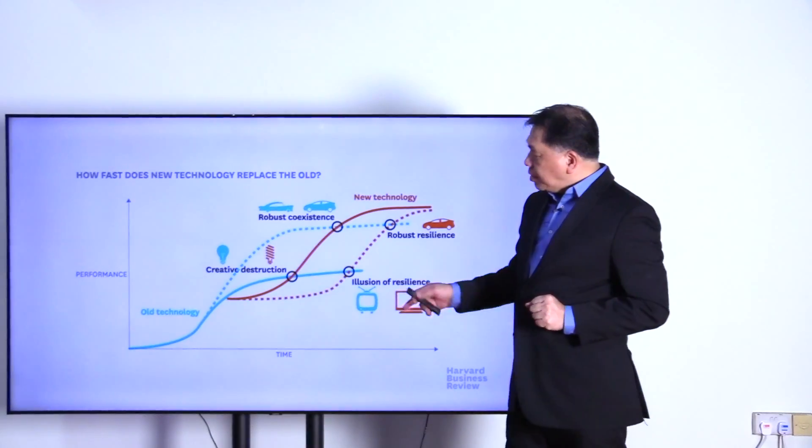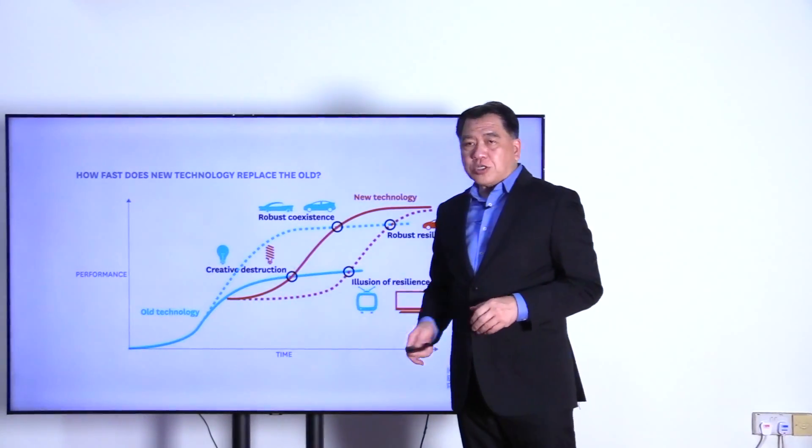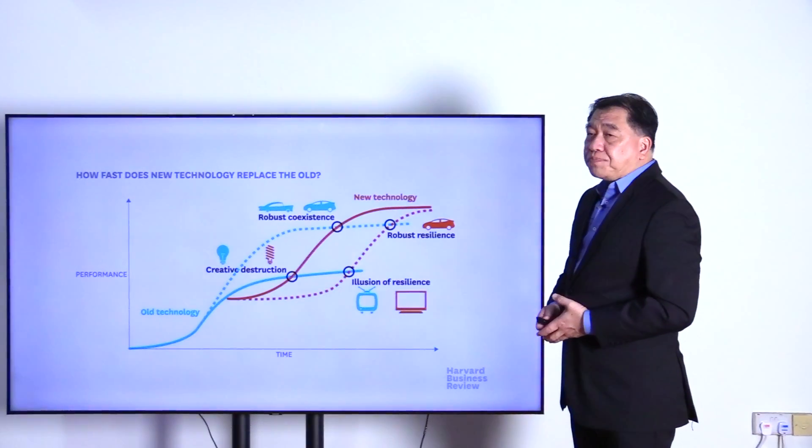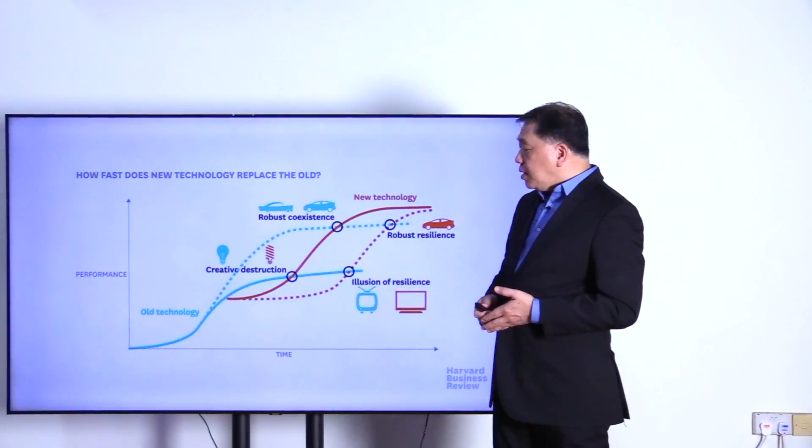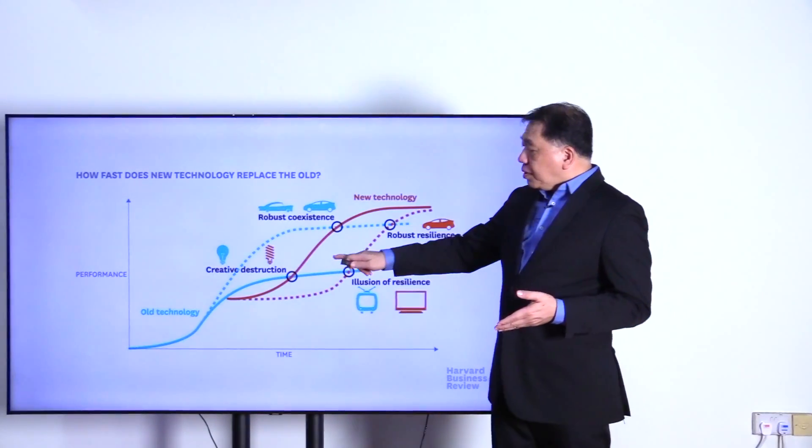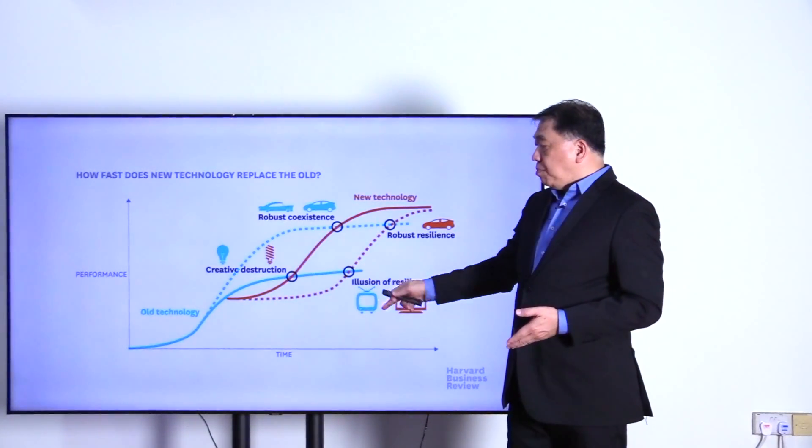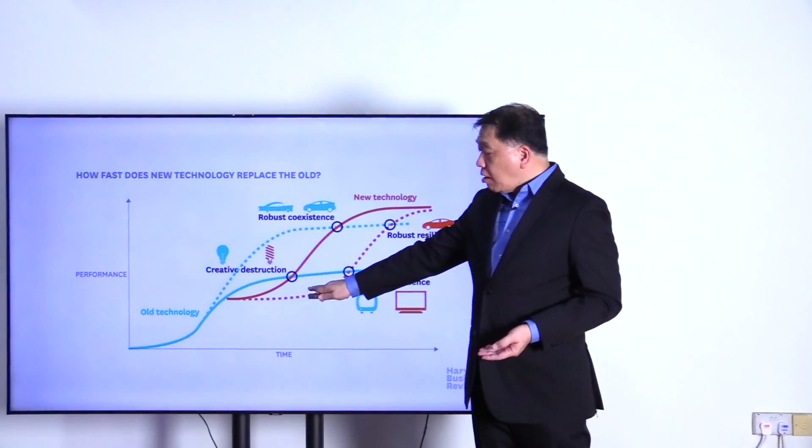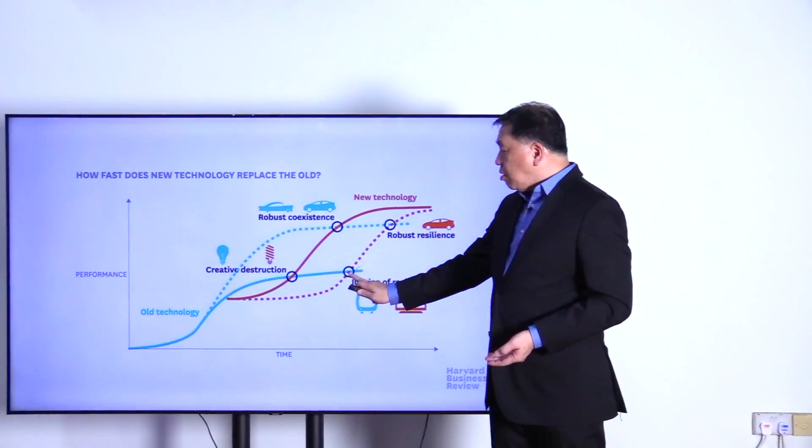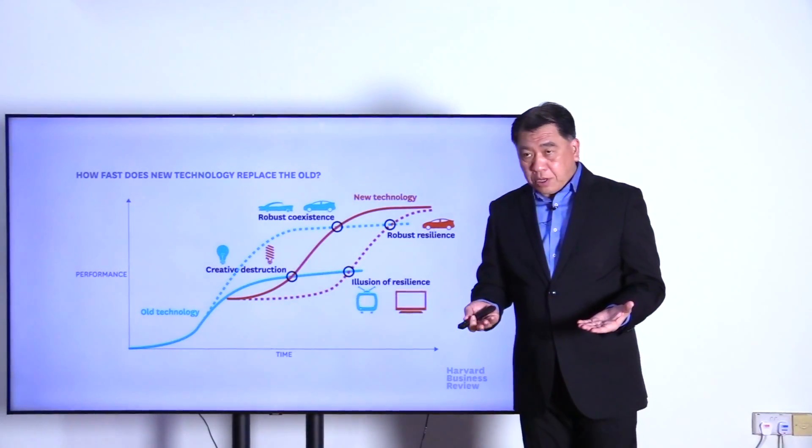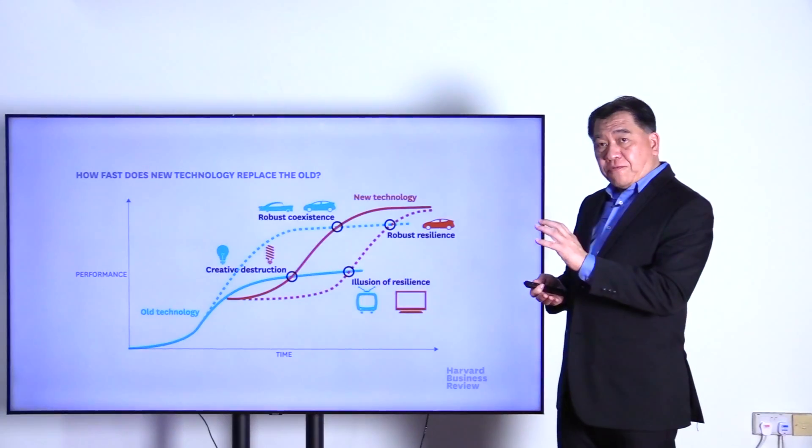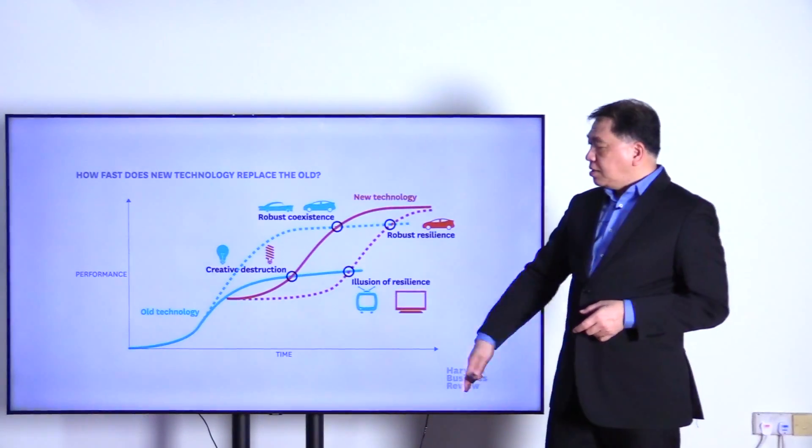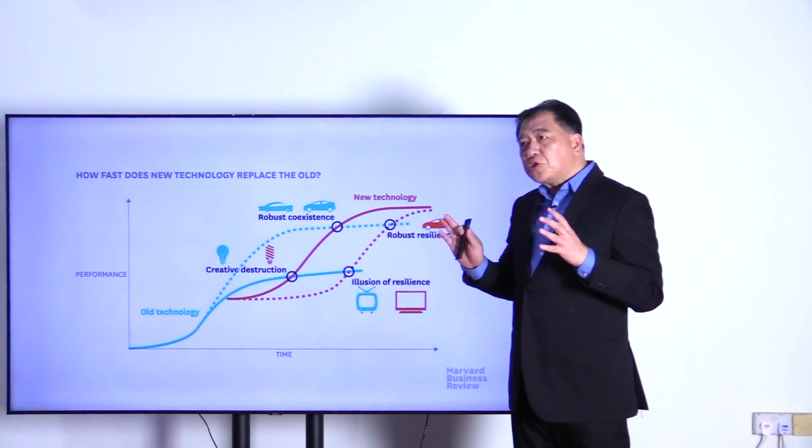So the solid line here shows creative destruction. Performance is better than the existing paradigm or existing S-curve, you kill the existing products. However, the existing curve can stretch because of the ecosystems, and therefore it will actually slow down the adoption. The adoption of the new technology will be at a longer time. The existing ecosystem can actually prevent it. Eventually it will be taken over. It's called illusion of resilience, but it will be taken over, it just drags the time.